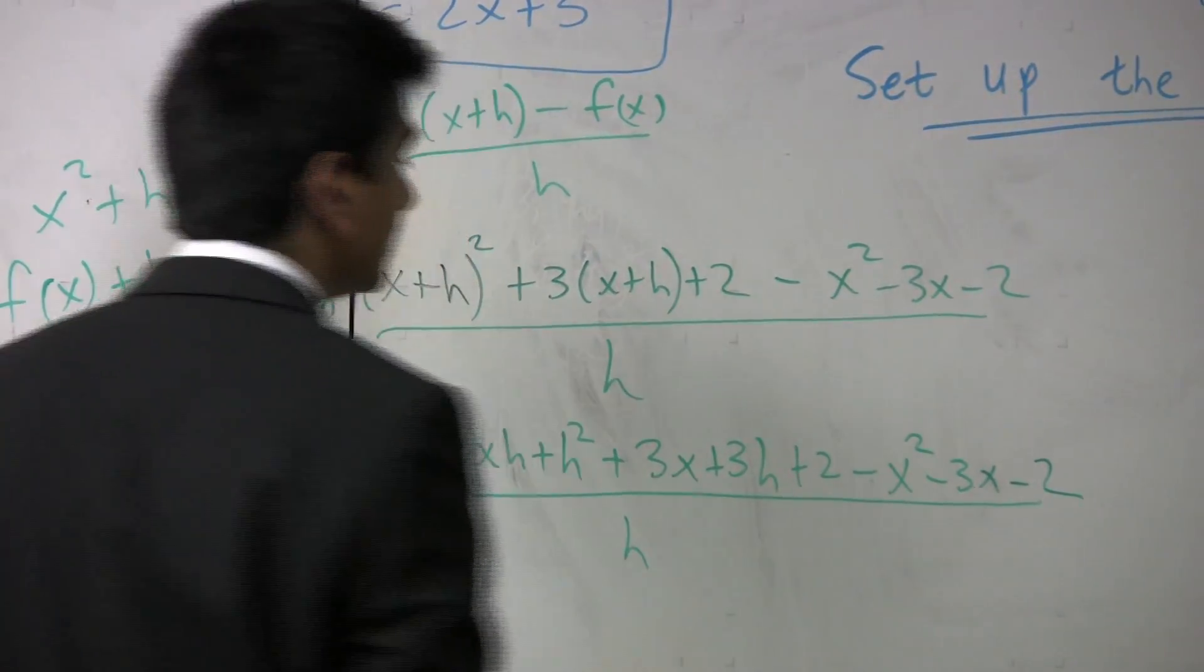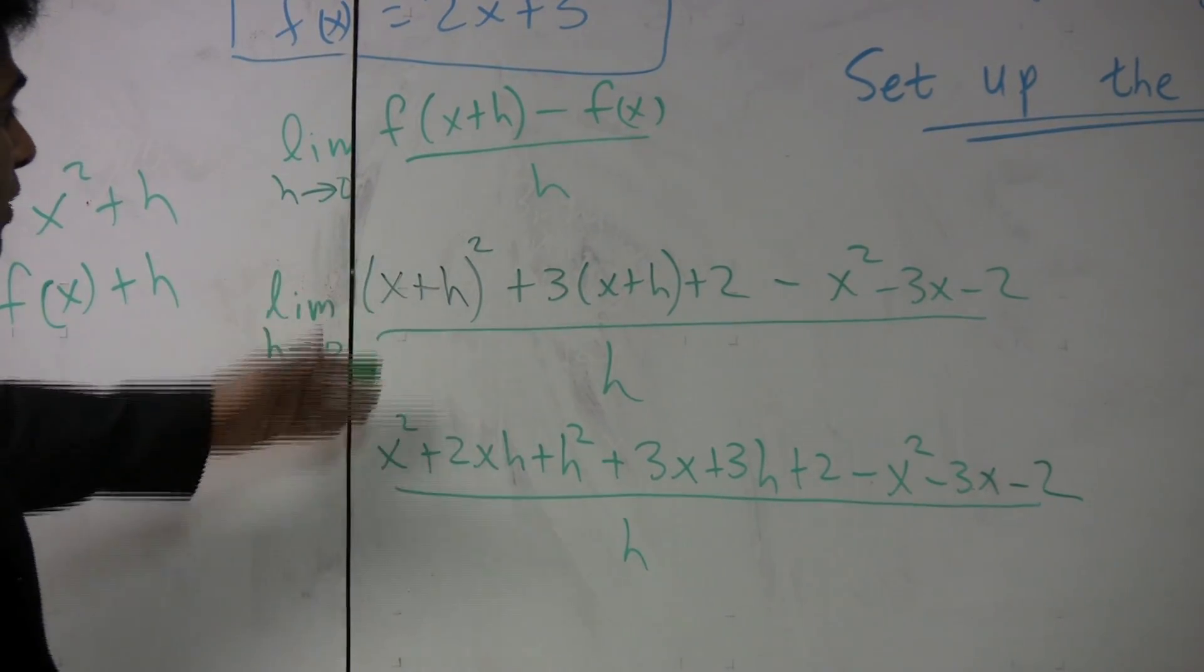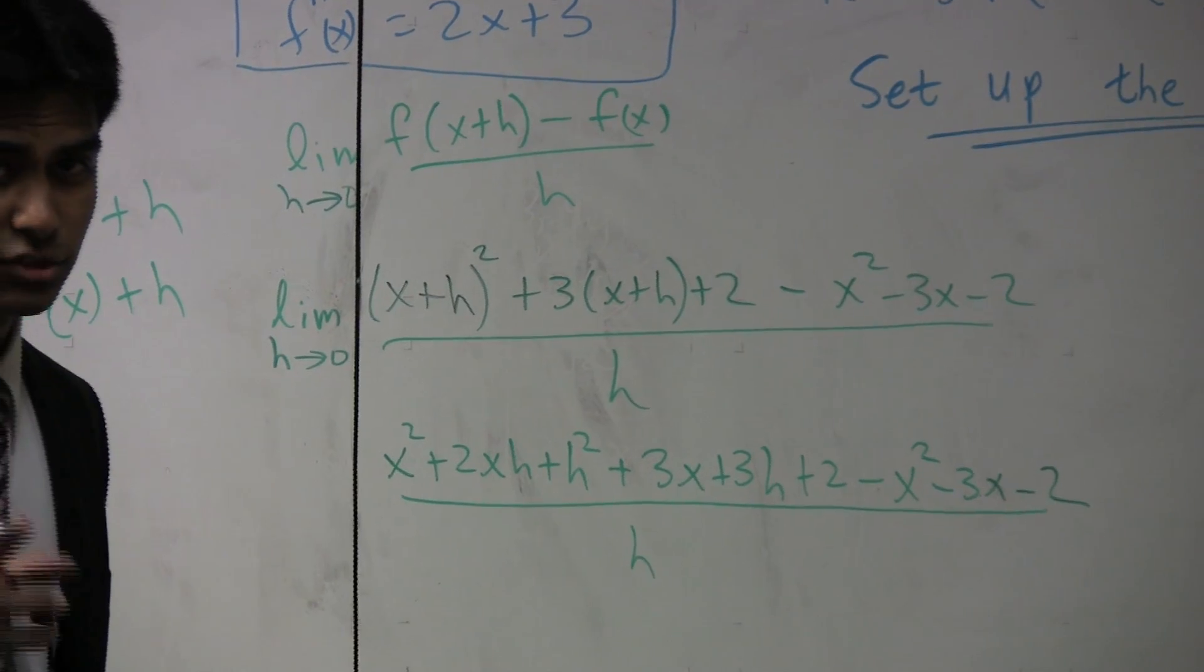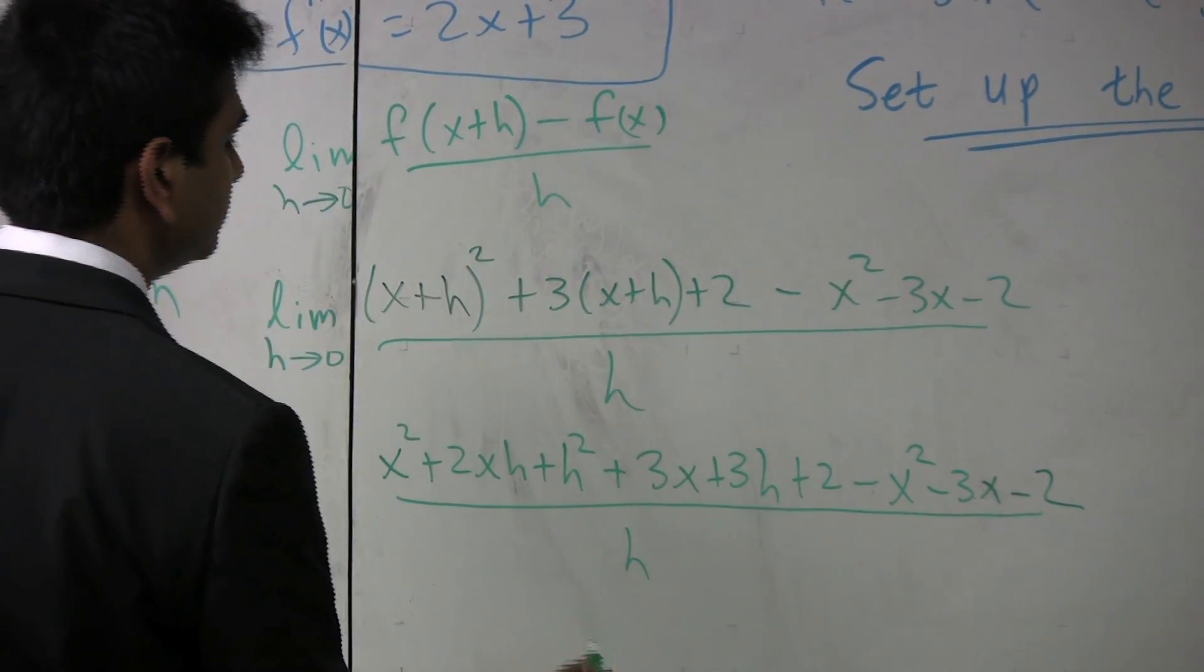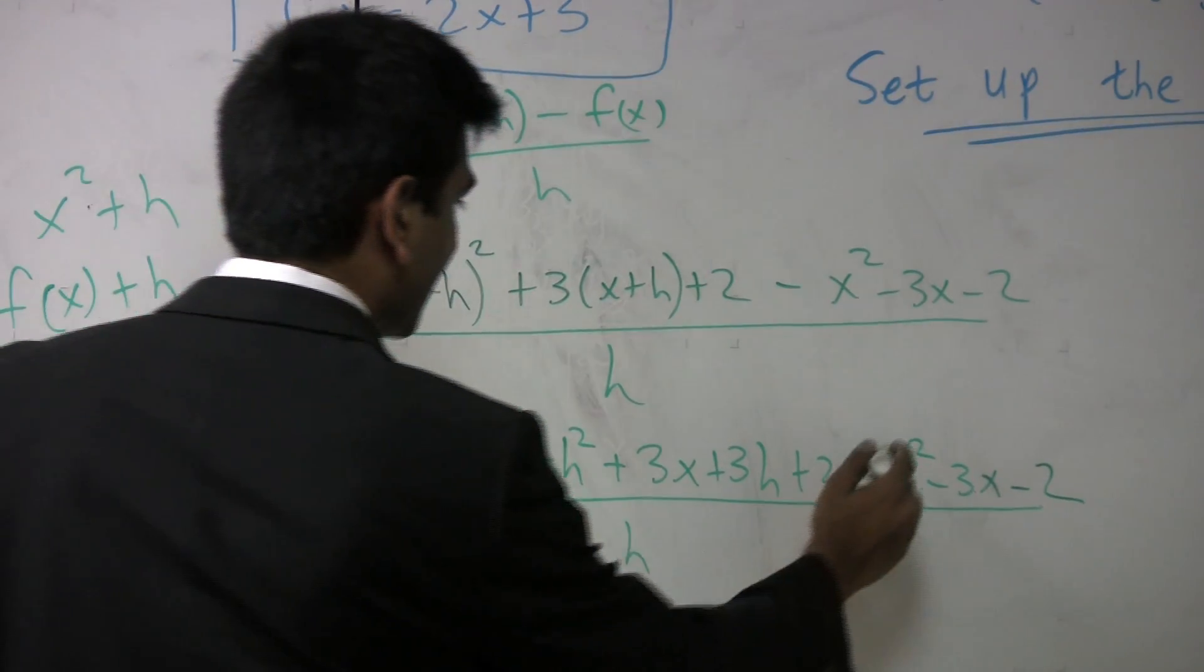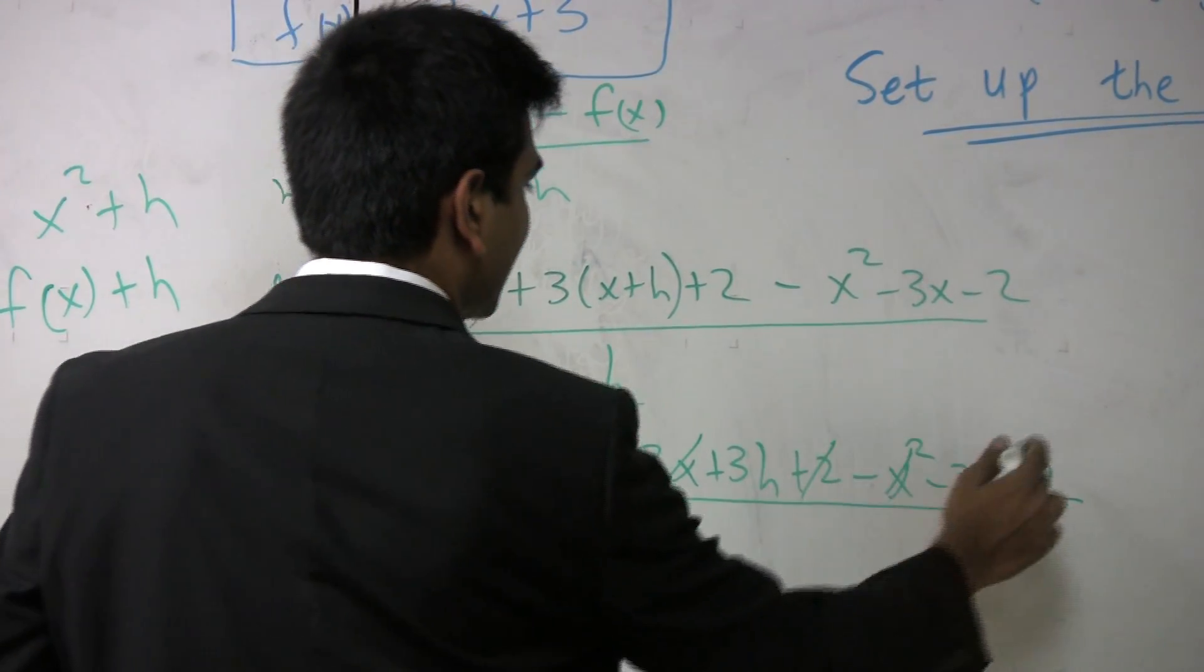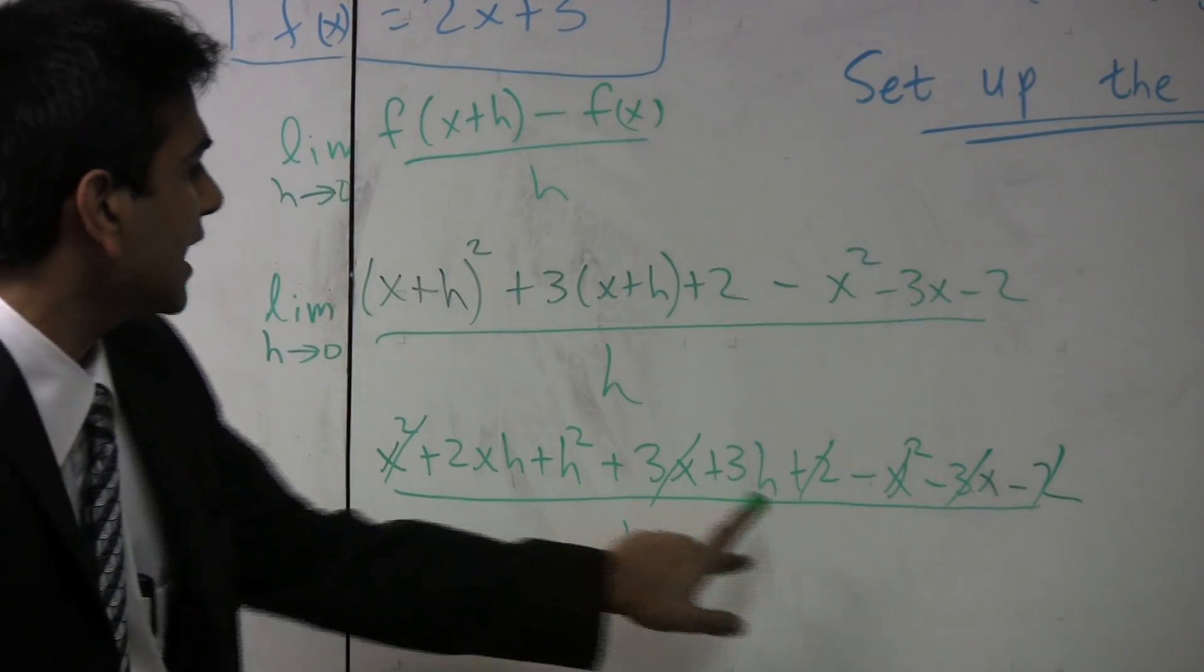So, a lot of this, as you can see, don't make mistakes while copying down the previous step. It's really easy to do that, so make sure you don't do that. And now, a lot of things will cancel. This x squared cancels with this. This 3x cancels with this. The 2 cancels over here. And now, we can take the h out in common.